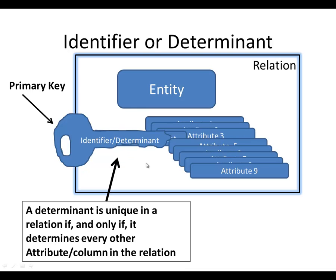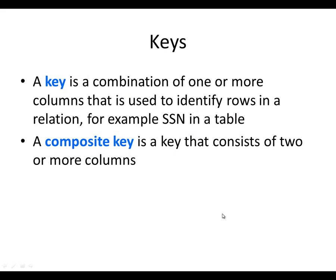Keys could be a combination of one or more columns used to identify rows in a relation. For example, a social security number can determine a person's name, email, address, and other information. A combination of first name and last name could also determine other information, although it's not unique since other people can share the same name. If we use more than one column to determine the others, we call it a composite key, which consists of two or more columns.